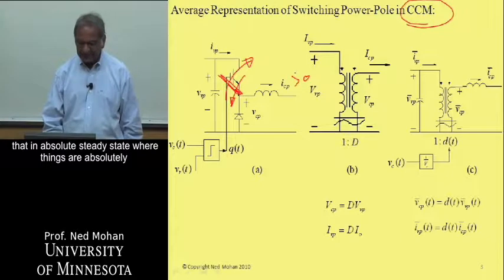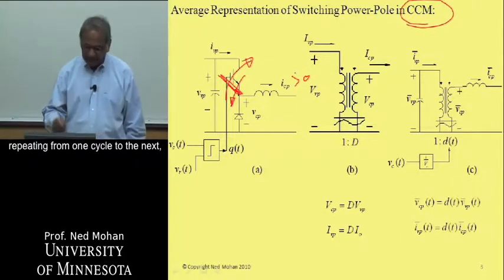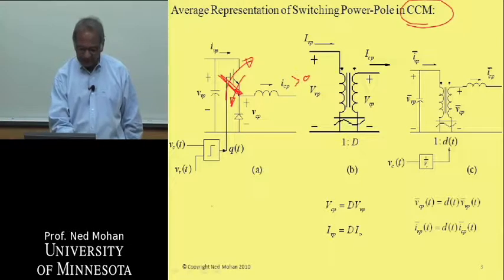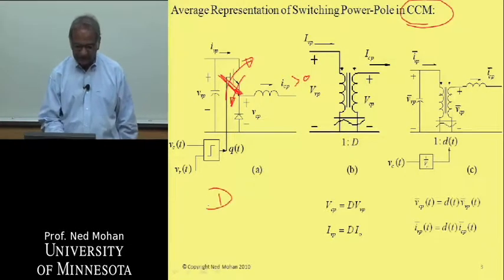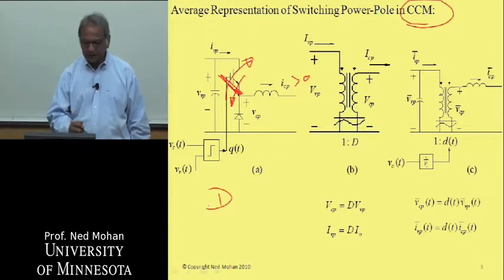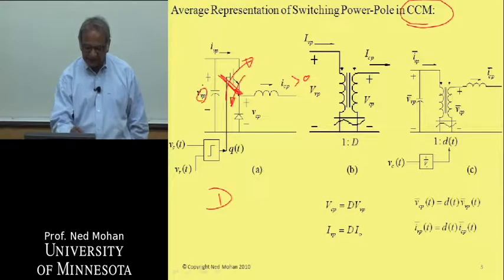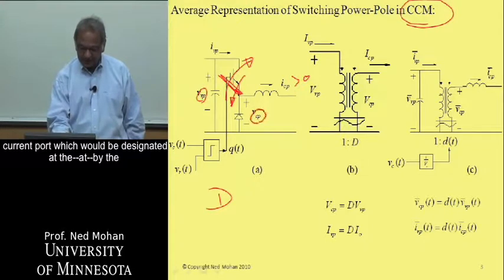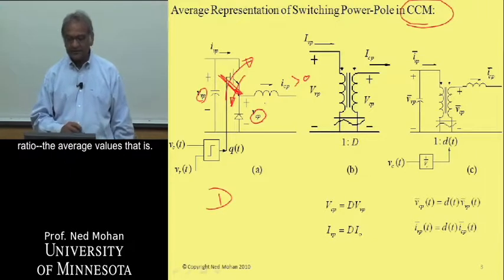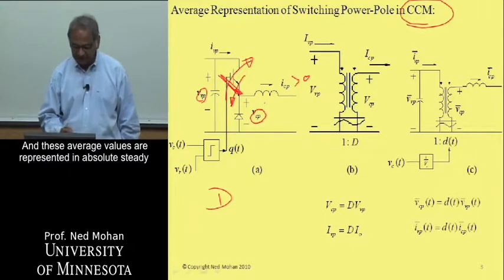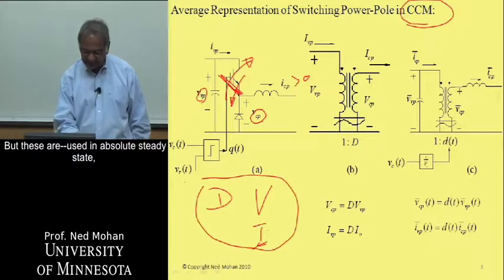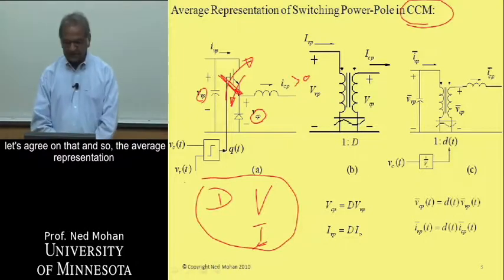In absolute steady state, where things are absolutely repeating from one cycle to the next, we use uppercase D for duty ratio. The voltages and currents at the voltage port (subscript V_P) and the current port (subscript C_P) are related by this duty ratio. These average values are represented in absolute steady state with uppercase V and uppercase I.